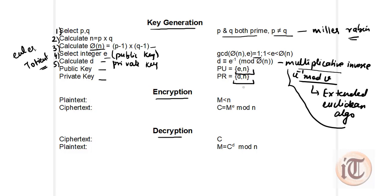The public key pair (e, n) is known only to the sender, who uses it to encrypt the plaintext. For encryption, the plaintext M must be less than n, and the ciphertext is calculated as C = M to the power e mod n. The private key pair (d, n) is known only to the receiver, who uses it to decrypt: M = C to the power d mod n.